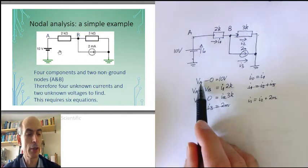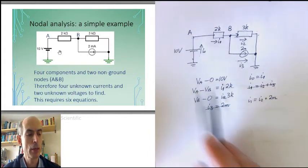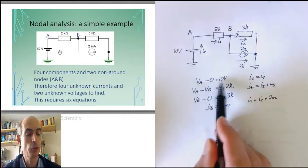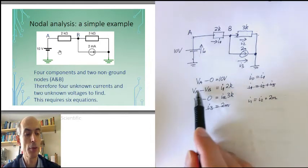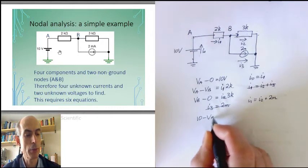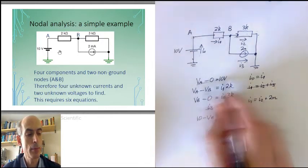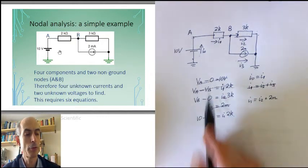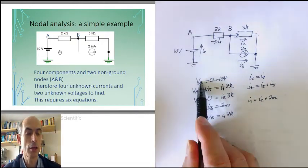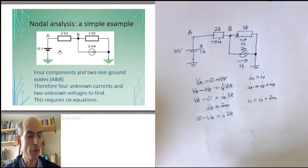I can do a similar trick up here. VA only appears in two equations. So I can take VA equals 10 volts, substitute that into here, replace both of these equations with 10 minus VB equals I1 times 2K. And I've replaced two equations with one, and got rid of the variable VA. I've now got four equations in four unknowns.